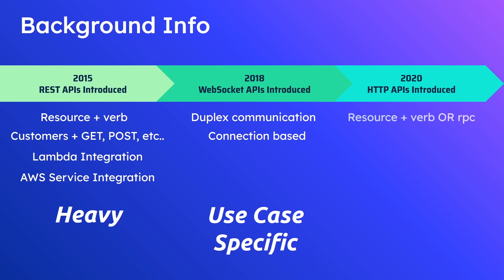HTTP APIs support resource/verb (in other words REST-style) or RPC — Remote Procedure Calls — which I'm a bit more of a fan of. REST APIs also technically support RPC but that wasn't what they were originally designed for. Since then, AWS has been adding features to HTTP APIs. They did come with a subset of functionalities compared to REST, but AWS has communicated clearly that HTTP APIs are the future and they will continue to invest in them — so parity is coming.